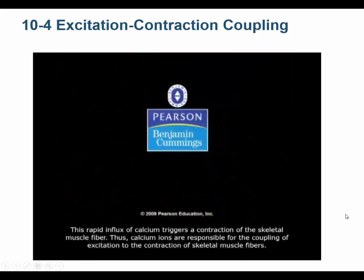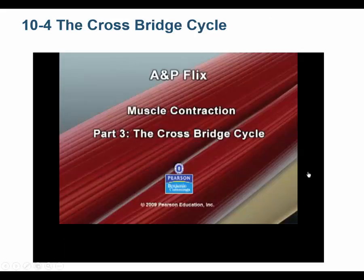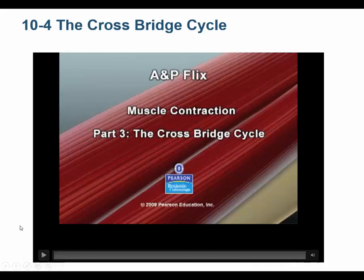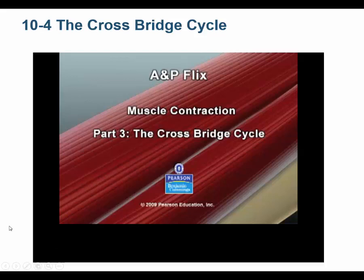The excitation-contraction coupling is actually calcium — you probably already put that together. Calcium had to bind the troponin to make tropomyosin flip out of the way. Excitation caused calcium release; calcium caused contraction. That's excitation-contraction coupling. This is the cross-bridge cycle: the myosin head binds the actin binding site, swivels, releases, binds, swivels, releases. ATP is involved — it's required to cock the myosin head and required to release the myosin head from the actin.